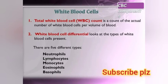The total white blood cell count is a count of the actual number of white blood cells per volume of blood. The white blood cell differential looks at the types of white blood cells — there are five different types: neutrophils, lymphocytes, monocytes, and eosinophils.